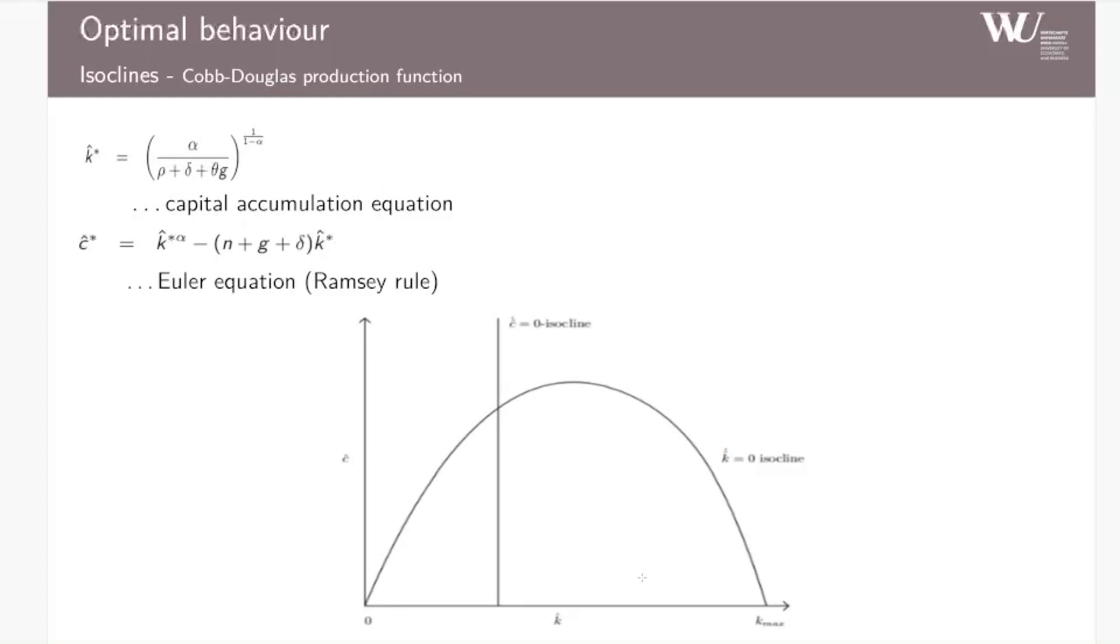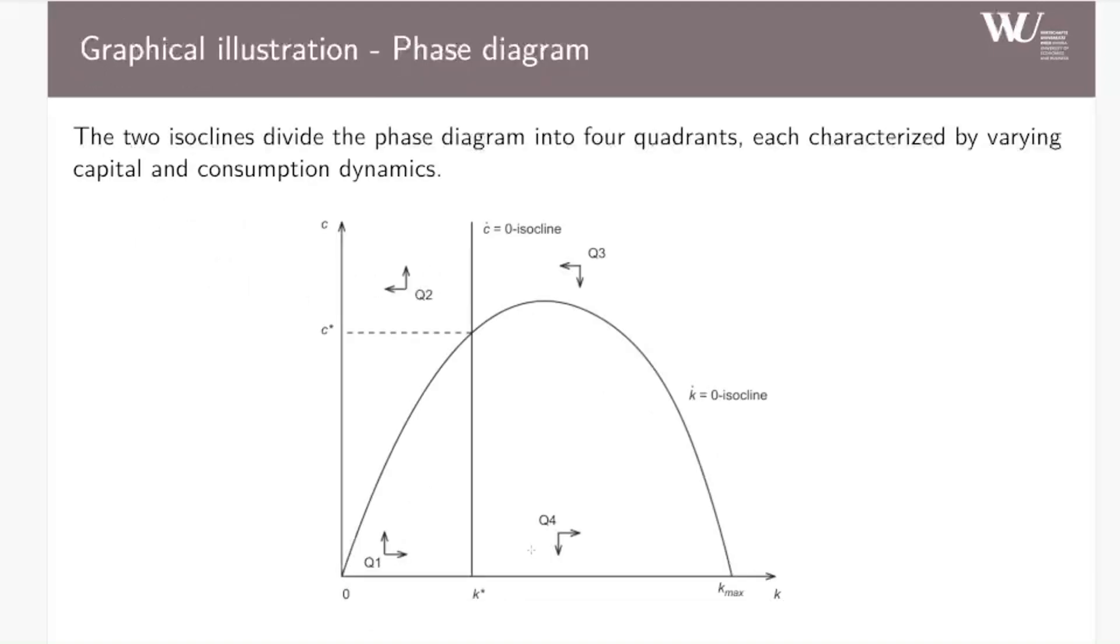The capital isocline is a hump-shaped curve crossing the x-axis at the origin and then again at the maximum level of capital per unit of effective labor. The consumption isocline crosses the x-axis at the initial level of capital. So the initial level is given, as will be discussed further in a second. It's already obvious that the two isoclines separate the phase diagram into four patterns, each characterized by different capital and consumption dynamics. This is further discussed in the lecture cast linked.